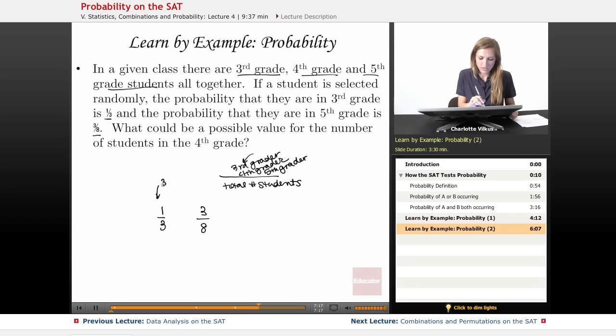So 3rd and 5th. So if I add these two, I could find the probability that I'm picking either a 3rd or a 5th grader. And then I could maybe subtract that probability to figure out what probability I have of picking a 4th grader.